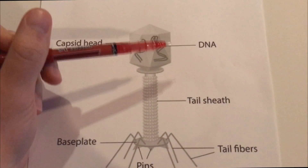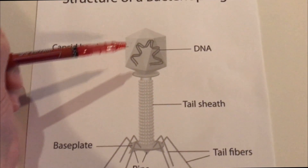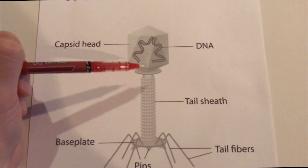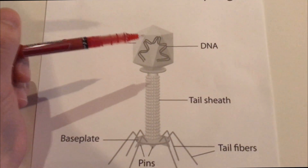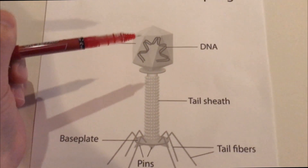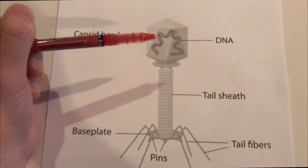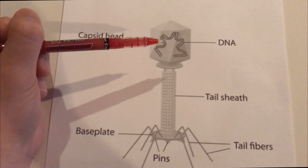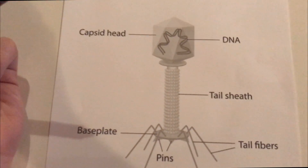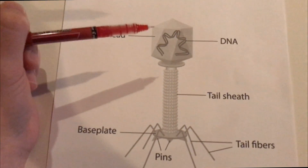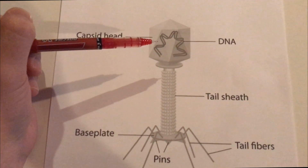And within the head, it consists of DNA, which can either be single-stranded RNA, single-stranded DNA, double-stranded RNA, or double-stranded DNA. Unlike humans, who only have double-stranded DNA.